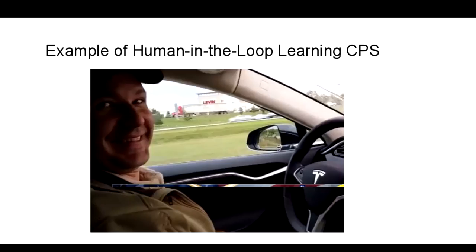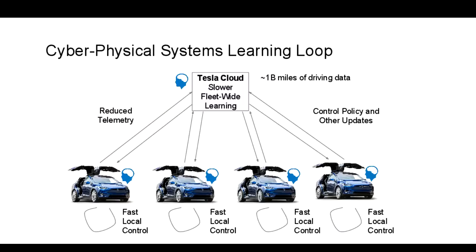The Tesla system as a kind of distributed or decentralized cyber physical system is really quite incredible. Every car employs machine-learned models, among other things, to implement fast local control for obstacle avoidance, lane centering, and these sorts of functionalities.